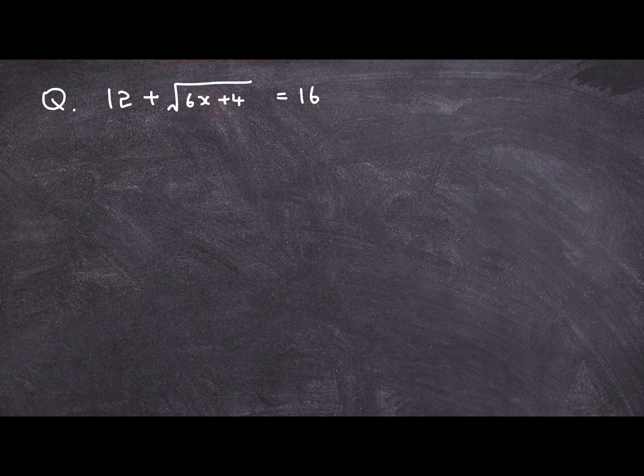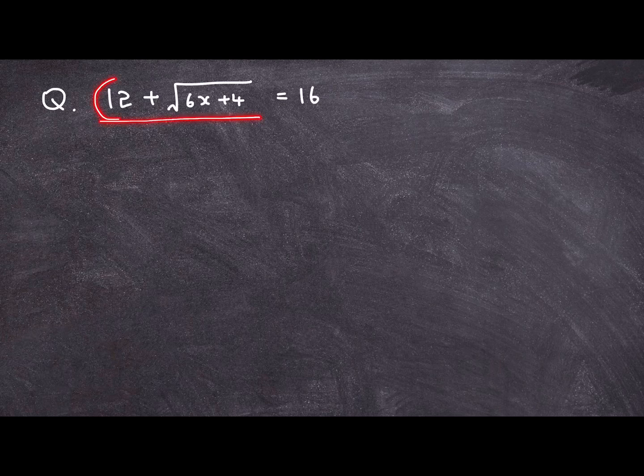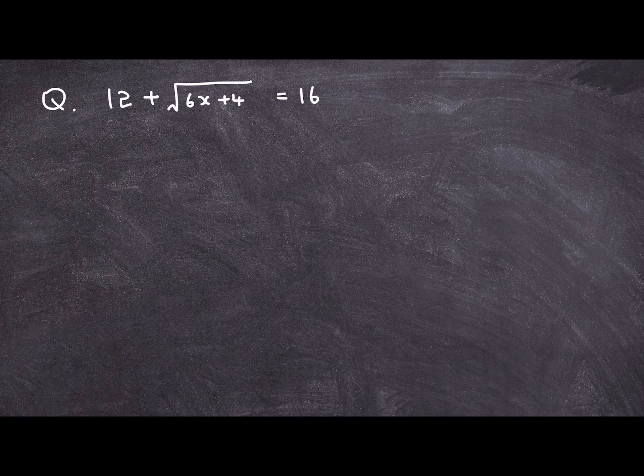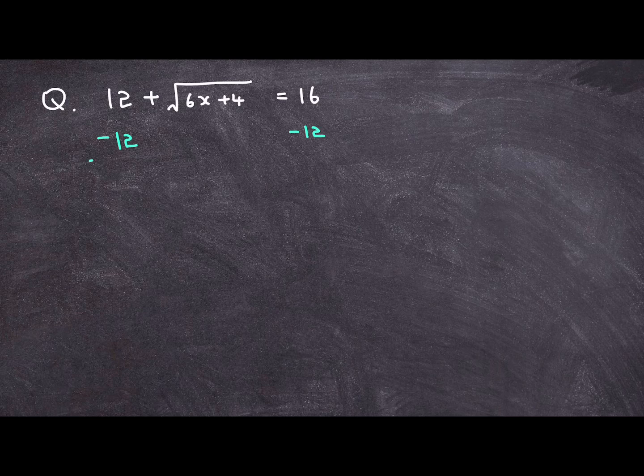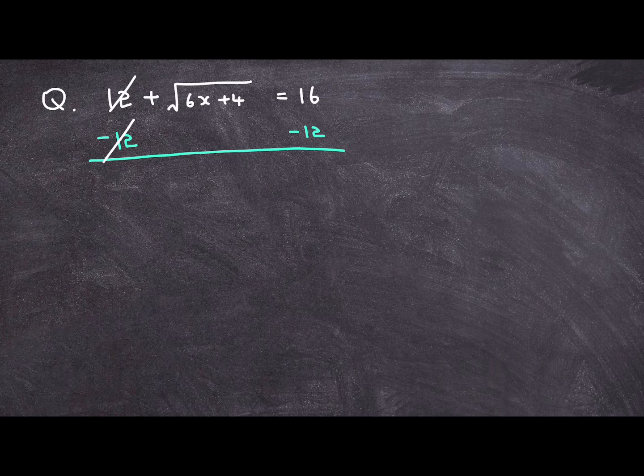So first thing that I'm going to remove from the left side of the equation is this integer term of 12. So I am going to subtract 12 from both sides of the equation. And that way, I'll be able to remove this integer term of 12.